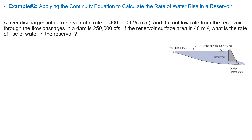Now let's take a look at the second example. In this example, we are going to apply the continuity equation to calculate the rate of water rise in a reservoir. The problem statement tells us that a river discharges into a reservoir at the rate of 400,000 cubic feet per second (CFS), and the outflow rate through the flow passage in the dam is 250,000 CFS. If the reservoir surface area is 40 square miles, what is the rate of rise of water in the reservoir?